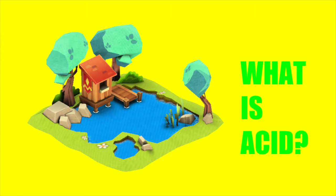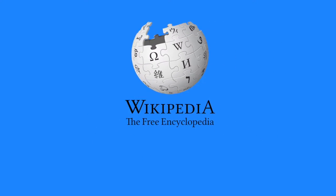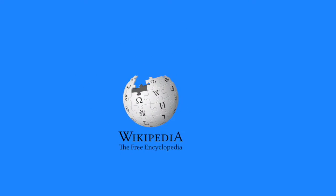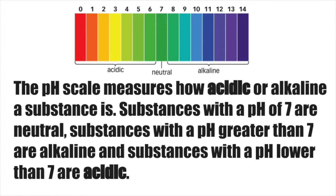First of all, what is acid? Of course, Wikipedia. The pH scale measures how acidic or alkaline a substance is. Substances with a pH of 7 are neutral. Substances with a pH greater than 7 are alkaline, and substances with a pH lower than 7 are acidic.